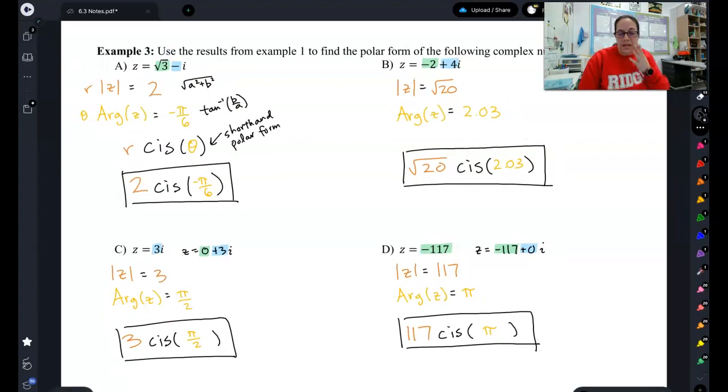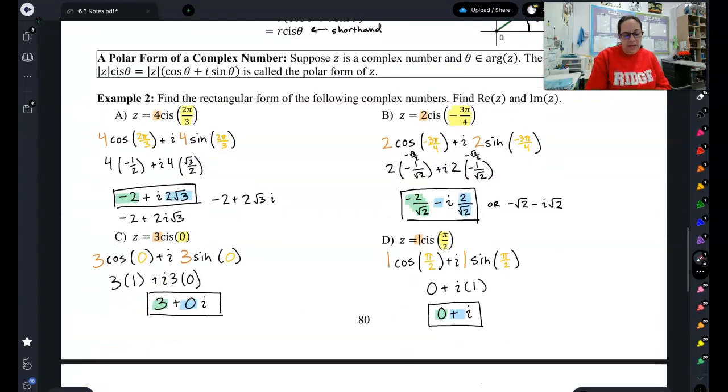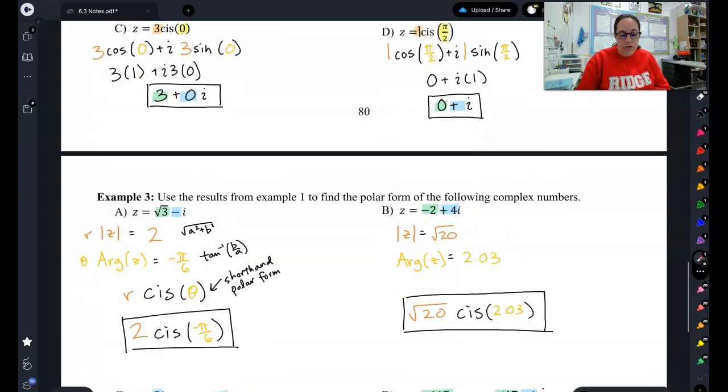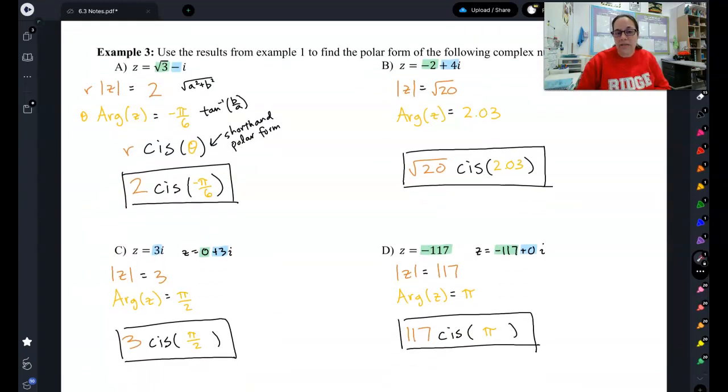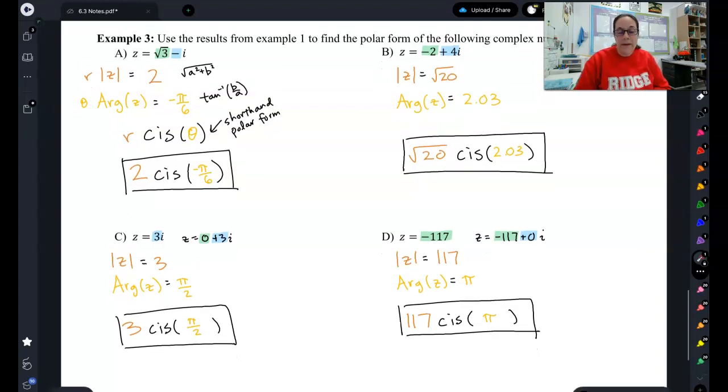So in summary, this lesson was about taking the rectangular form of a polar coordinate, a plus bi, and being able to change that into its polar form, or vice versa, taking the polar form of a complex number and changing it into its rectangular form. So you should now be able to go between the rectangular and polar form for complex numbers interchangeably. And that's it for 6.3. You are totally done.